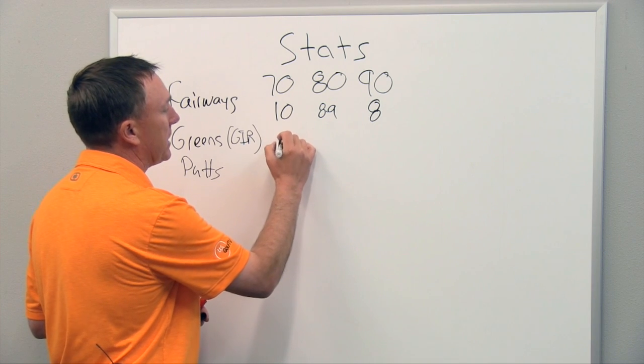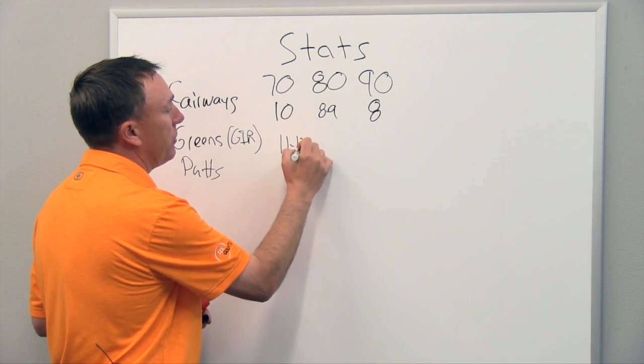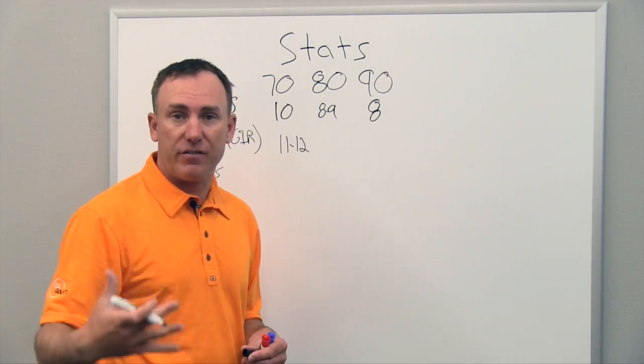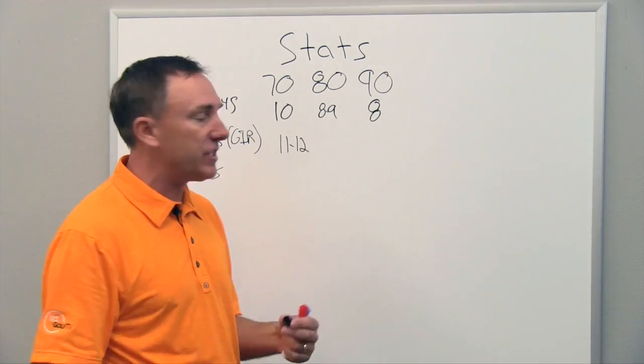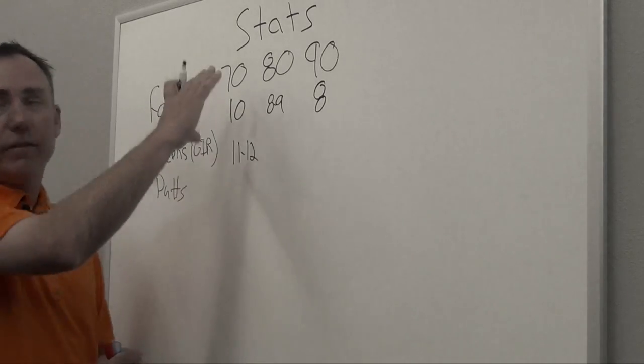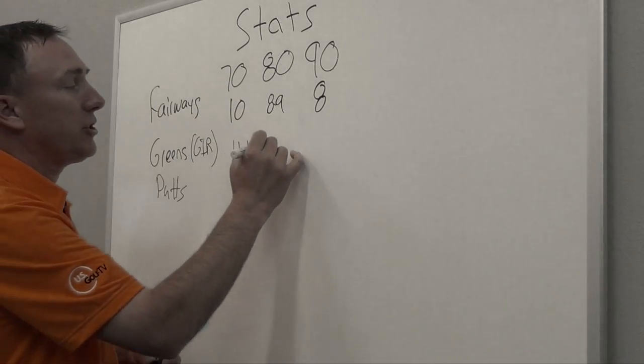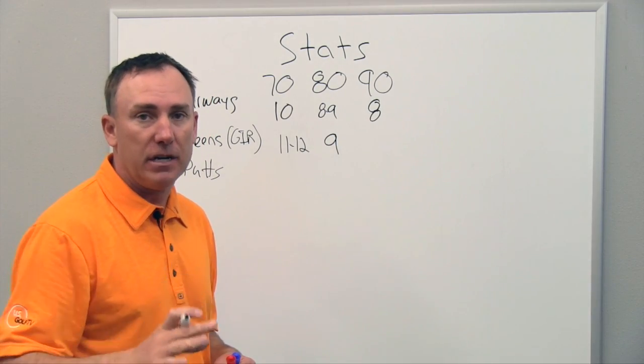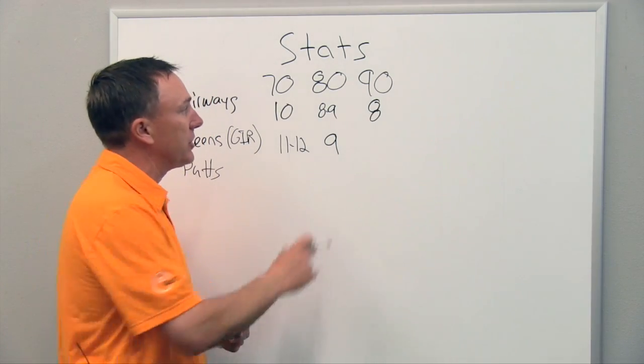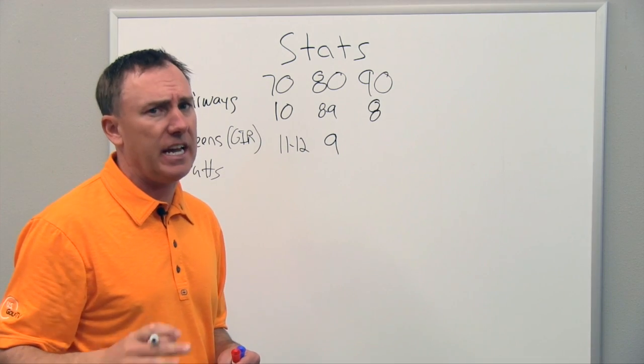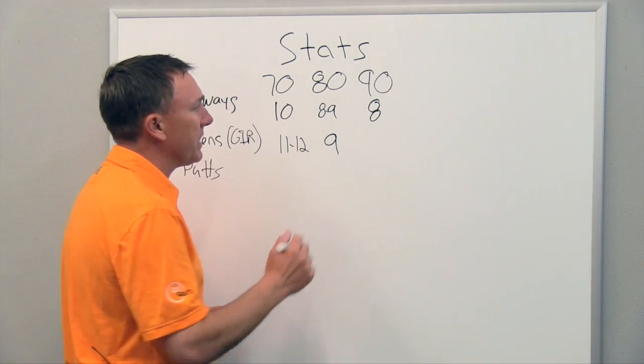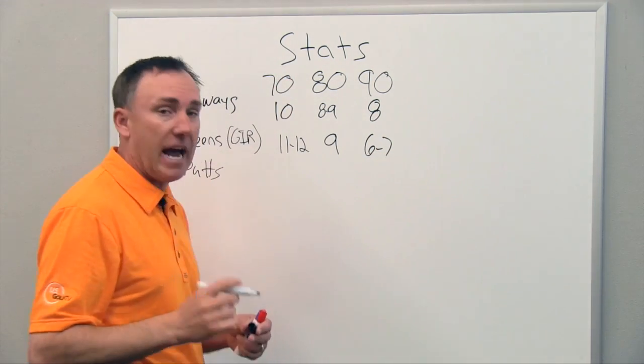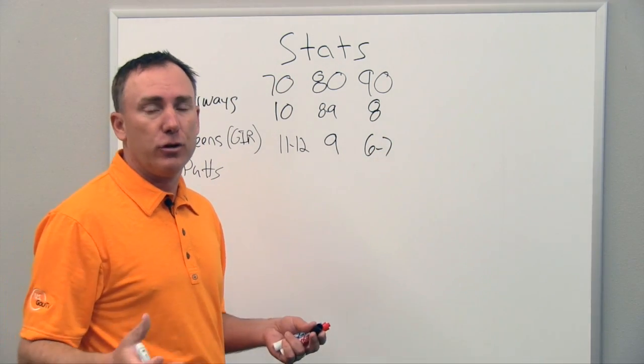So for a 70s shooter, even some of the best players in the world, if you're shooting around 11 to 12 on average, hopefully you're going to have days that are better than that, but over the course of a season, 11 to 12 is going to be pretty good. For an 80s shooter, once again, I like nine is kind of a good guideline, about half of them. If you're hitting half of the greens in regulation, you should definitely be shooting in the 80s, if not a little bit better. If you're in the 90s, man, if you can get around six or seven greens in regulation as a goal, you're going to be doing really well.